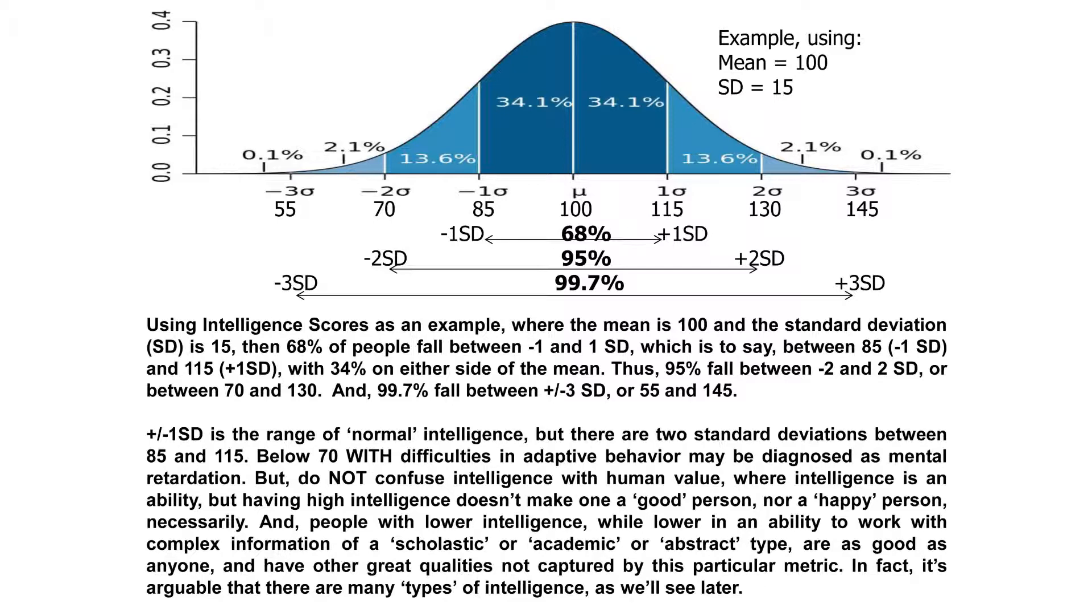Then you get as far out as subtracting that standard deviation from the mean three times or adding it to the mean three times, and now you got 99.73%, which still leaves roughly 0.3%. In a small group of people that's not going to occur, they're going to probably fall within the plus or minus three. But when you're talking about the nation or the world, you're talking about a lot of people falling into those outlier categories.